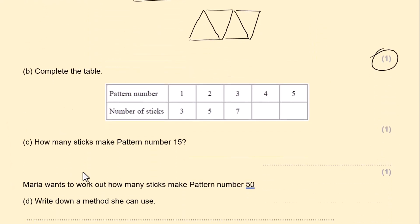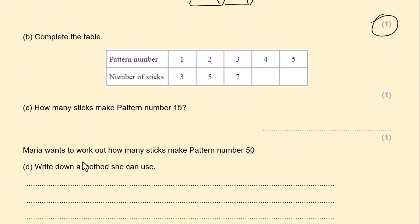Pattern number 1, 3, 2, 5, 3, 7. So we can see pattern number is going up in 2's. So 7 add 2 is 9 add 2 is 11. One mark. How many sticks make pattern number 15. So it goes up in 2's. So you can count up to pattern number 15. Or you can find the relationship between the patterns what's going on. So 1 times 2 add 1 is 3. 2 times 2 is 4 add 1 is 5. 3 times 2 is 6 add 1 is 7. So 15 will be 15 times 2 add 1 which is 31. And this is worth one mark.